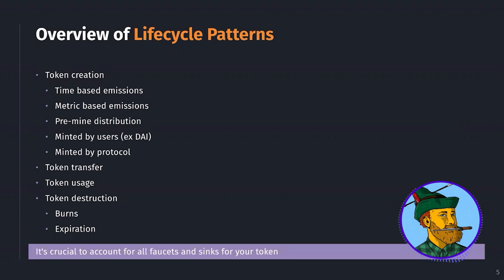Token usage covers the utilities and use cases — what are your users using it for on a day-to-day basis? And then finally, token destruction. Not all tokens will necessarily be destroyed, but things like token burns or expiration dates are relevant and common dynamics in tokenomics. It's crucial to account for all these faucets — sources of supply — and sinks, sources of reducing supply, for your token.